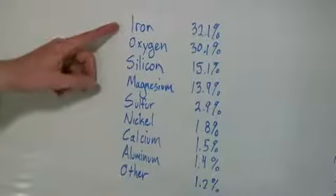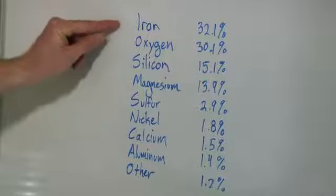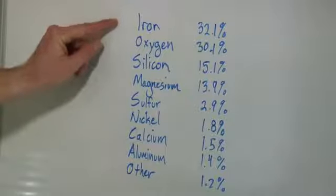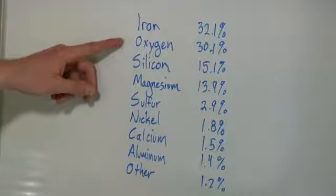You'll notice that the first two, iron and oxygen, make up roughly 30% each. So iron is the most abundant at 32.1%. Then you have oxygen, which is 30.1% of the entire composition of Earth.